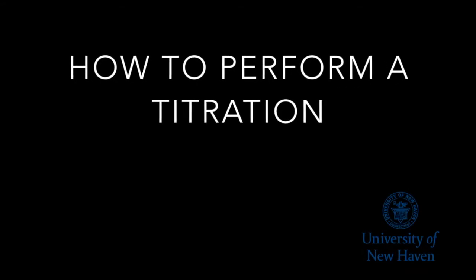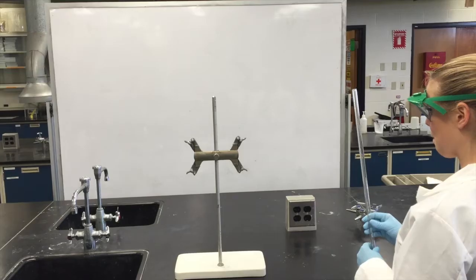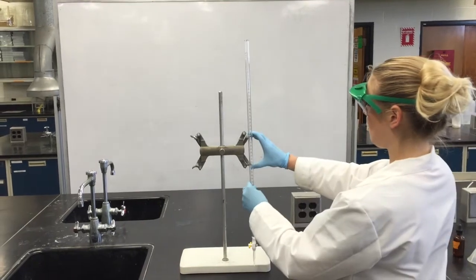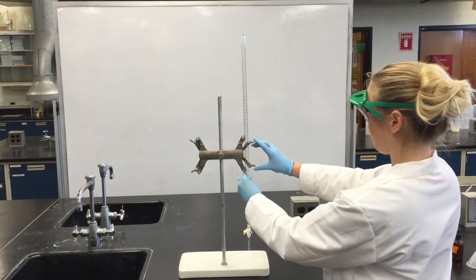In this video, you will learn how to perform a titration. First, mount a burette to a stand by pinching two clamps together and releasing to hold the burette.